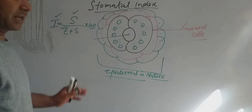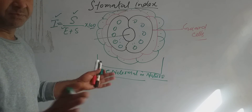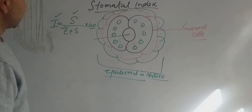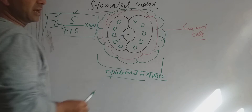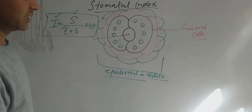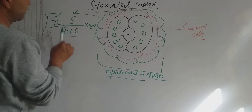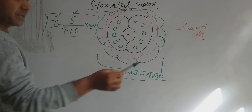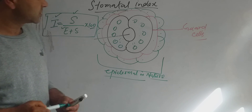The stomatal index is defined as the number of stomata surrounded by epidermal cells per unit area. To summarize the formula: I = S / (E + S) × 100, where I is the stomatal index, S is the number of stomata, and E is the number of epidermal cells.